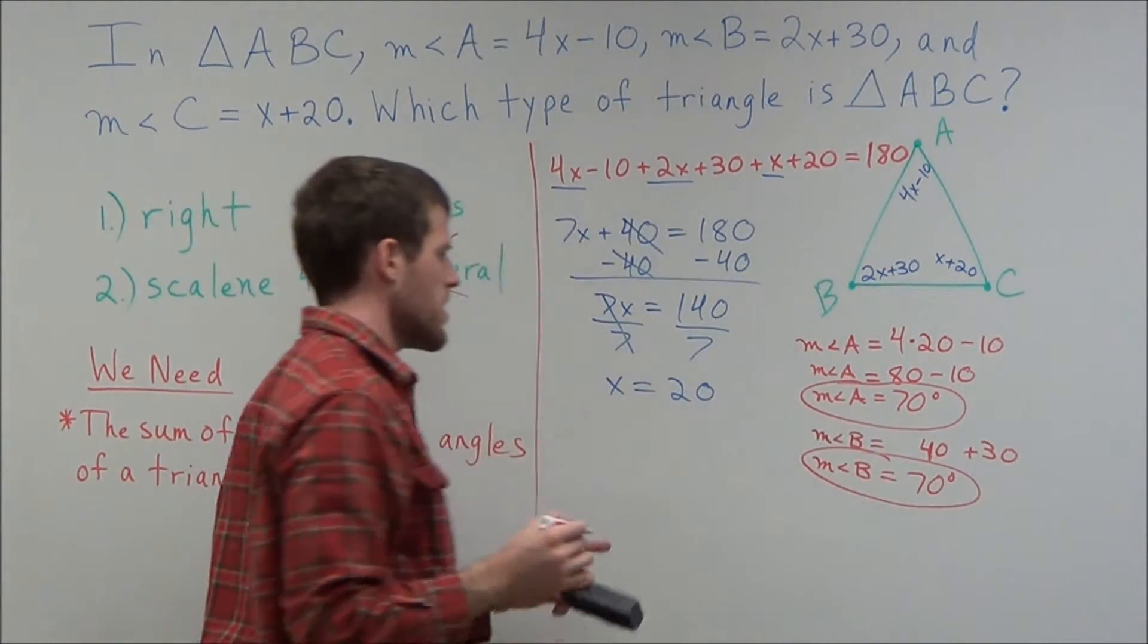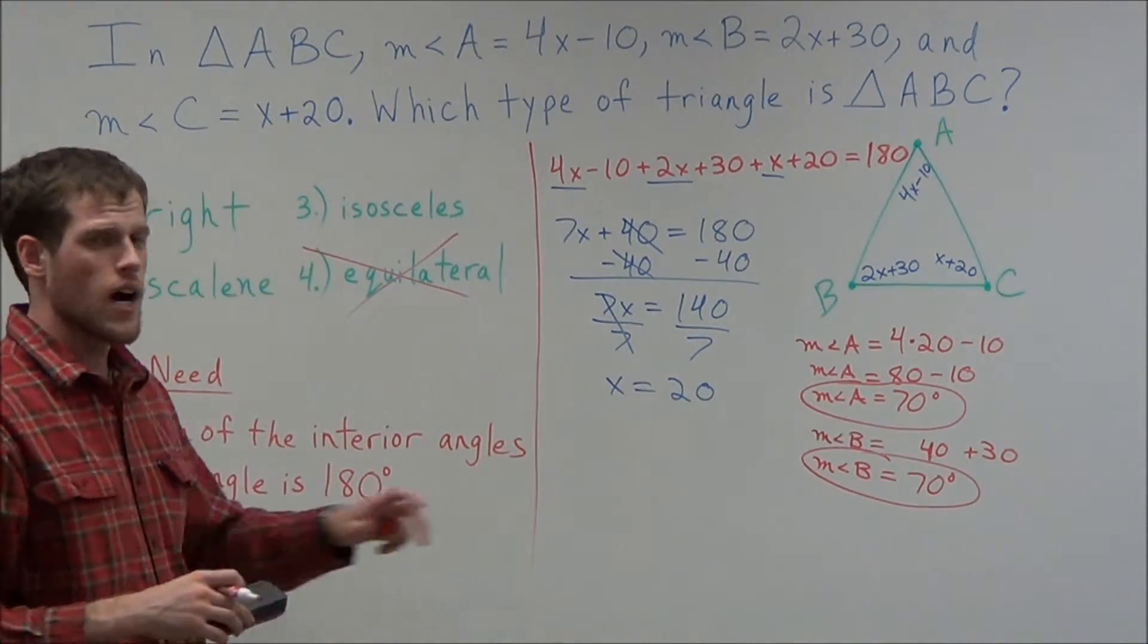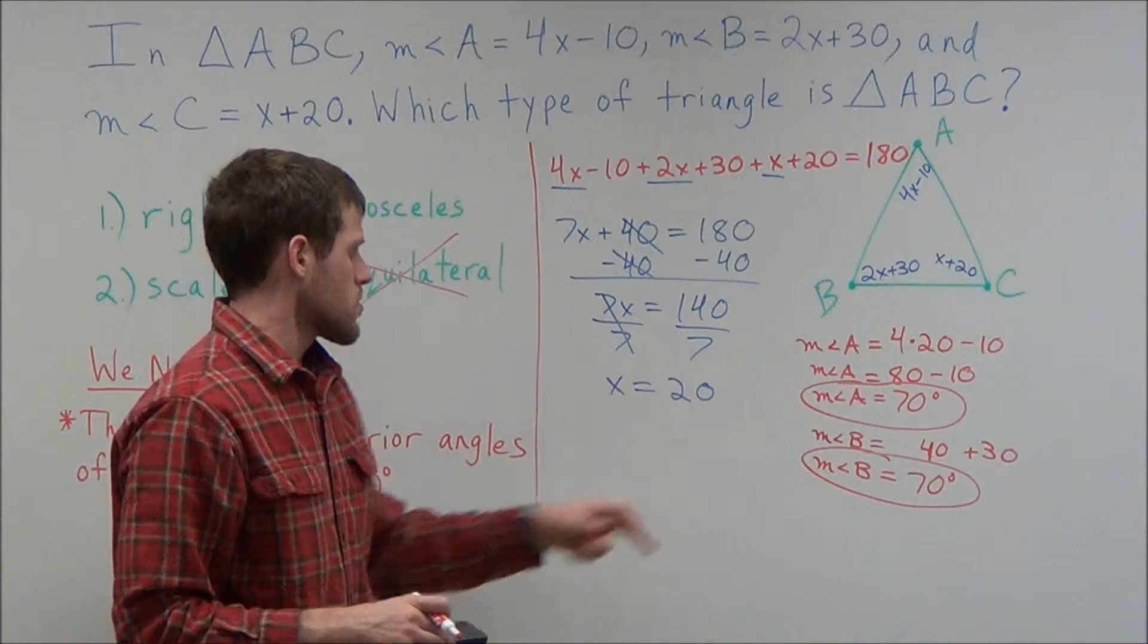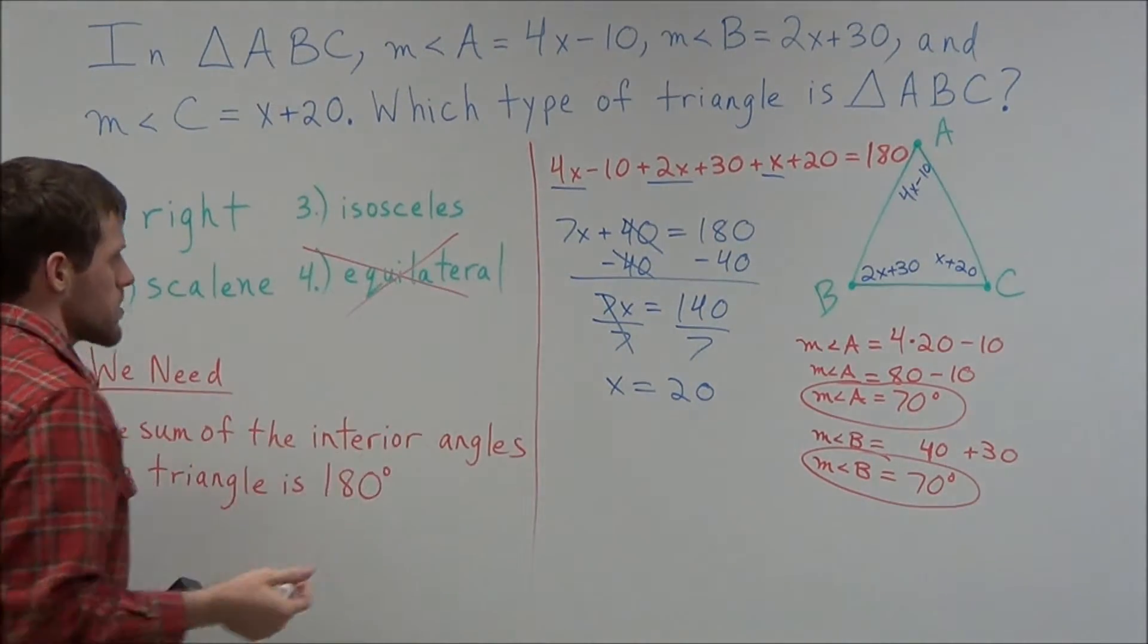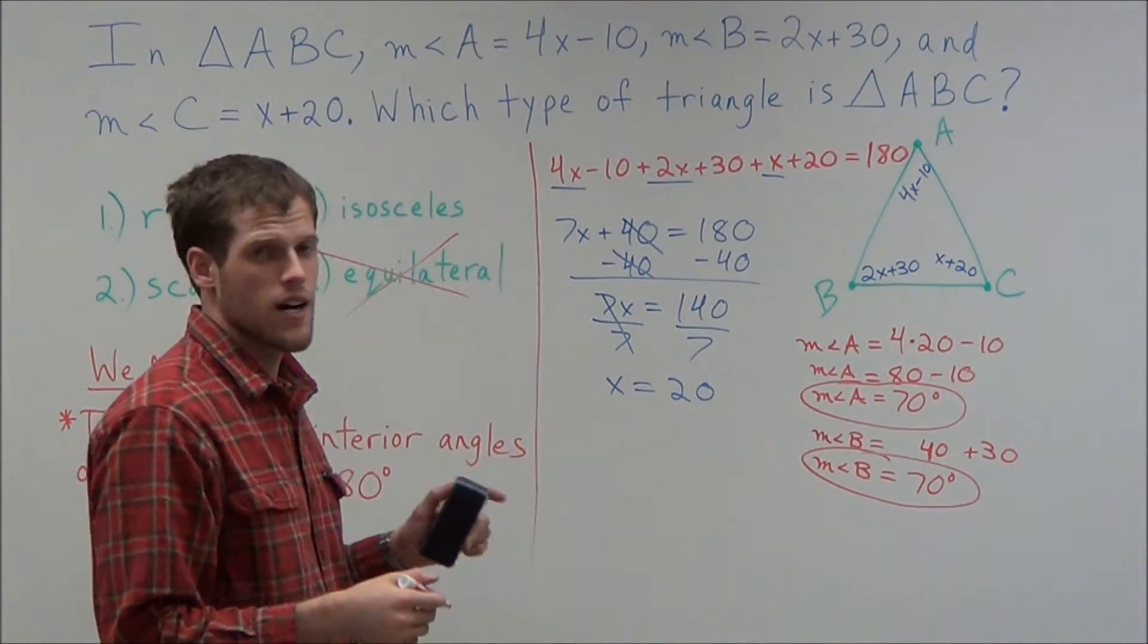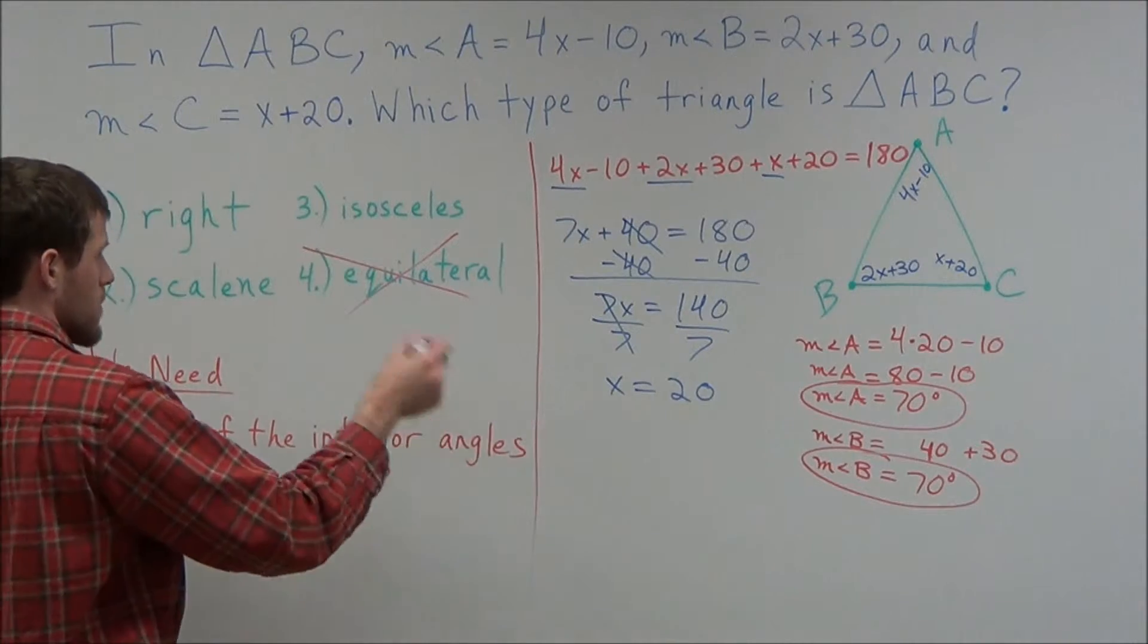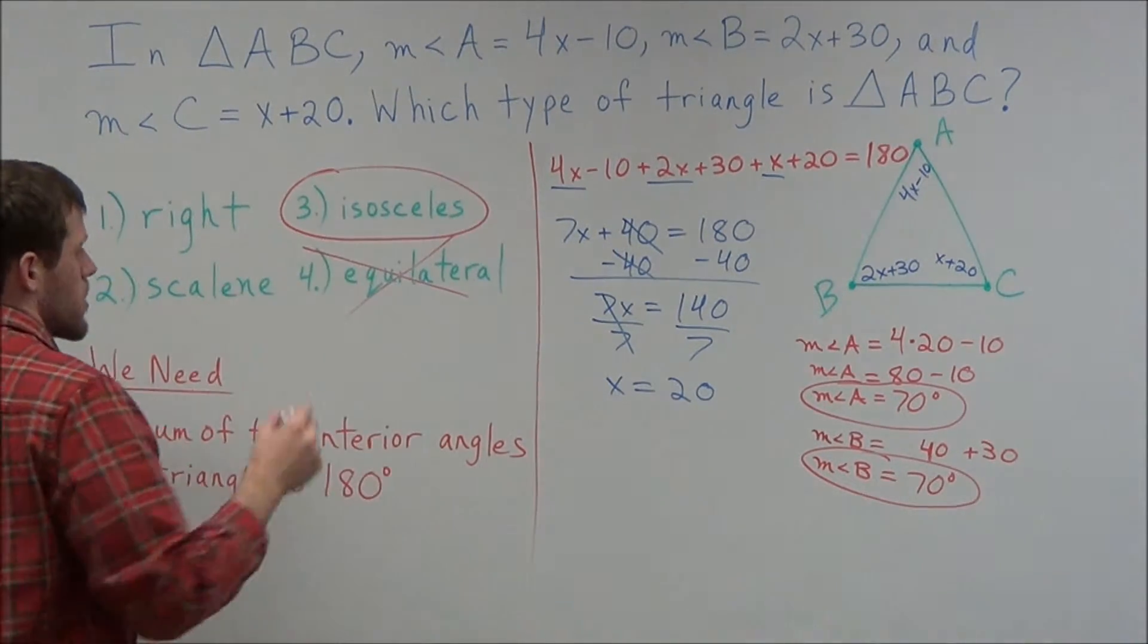So at this point here we could stop. Because notice we have 2 congruent angles. So right away we know that we have an isosceles triangle. Because an isosceles triangle has 2 congruent sides, and it has 2 congruent angles. So the fact that we have 2 congruent angles tells us right away that we have an isosceles triangle.